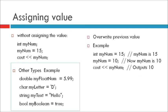Assigning value. You can also declare a variable without assigning the value or assign the value later. For example, integer myNumber semicolon, myNumber equals 15 semicolon, cout insertion myNumber semicolon.